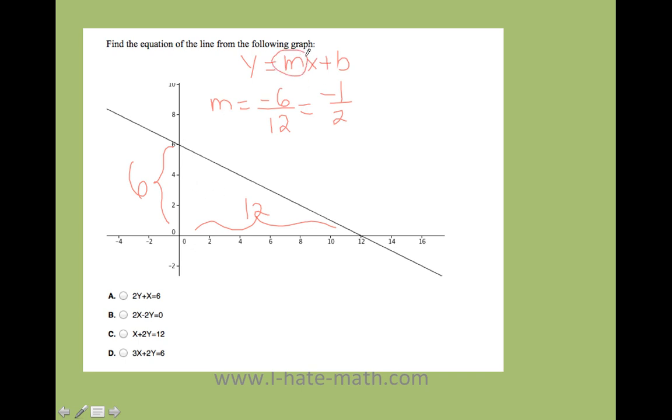Now that I have my m, I need my y intercept. Well, don't forget, the y intercept is the point where x equals 0. This is y, this is x, and voila, this is my y intercept. So I can go ahead and say y equals negative 1 half x plus 6.